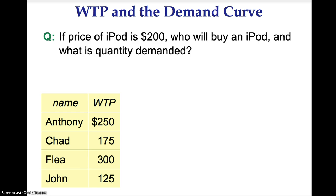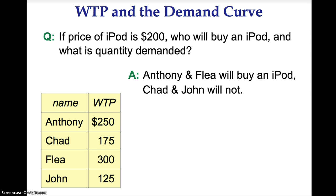If the price of an iPod is $200, who will buy an iPod and what is the quantity demanded? Only those buyers whose willingness to pay is greater than $200 will buy the iPod. Therefore Anthony and Flea will buy an iPod; Chad and John will not. Quantity demanded is two iPods when price is $200.